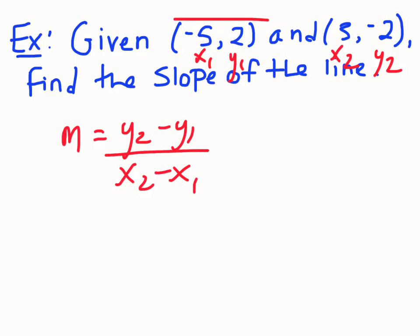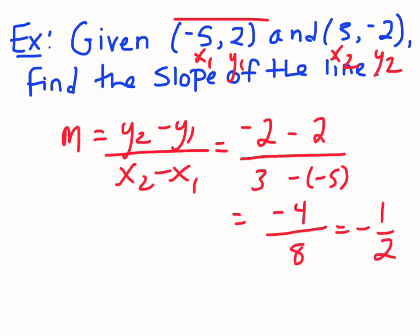Make sure you're careful with your negatives. So y2 is negative 2, y1 is 2, divided by x2 is 3, and x1 is negative 5. You've got to be careful—that's subtracting a negative, so let's put that negative in brackets. So that's going to be negative 4, all divided by 3 subtract negative 5, which is the same as adding, so that's 8. This gives us negative 1 half. So the slope of the line that goes through those two points is negative 1 half.